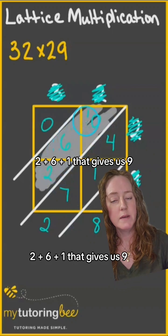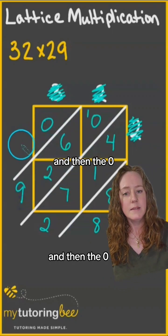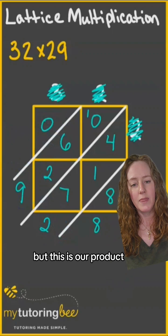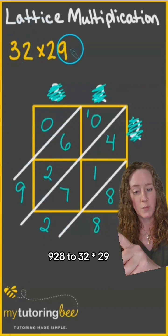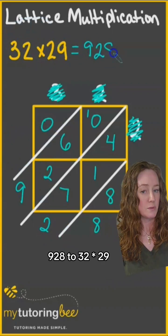2 plus 6 plus 1, that gives us 9, and then the 0 you can either write 0 or just leave it blank, but this is our product. 928 is 32 times 29.